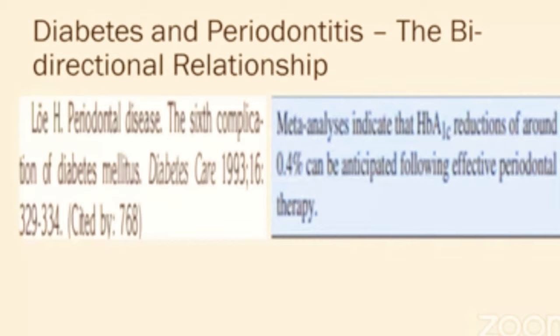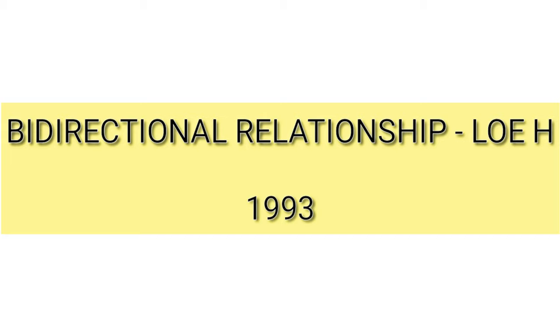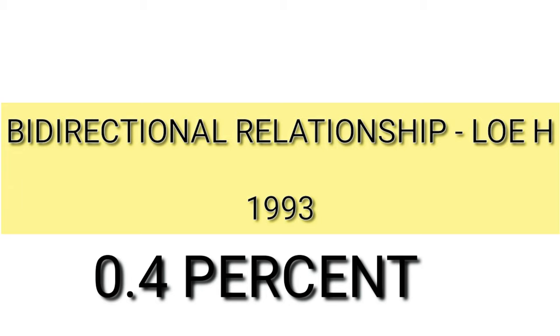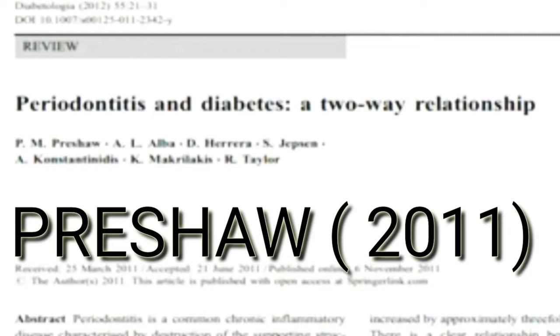Next we move on to diabetes and periodontitis — the bi-directional relationship. The 1993 paper by Loe — 'Periodontal disease: the sixth complication of diabetes' — showed the direct relationship between periodontal therapy and diabetes. His meta-analysis indicated that an HbA1c reduction of around 0.4% can be anticipated following effective periodontal therapy. The 2011 paper by Preshaw established that periodontitis and diabetes have a two-way relationship: periodontal therapy can help glycemic control, and glycemic control can help reduce periodontitis.